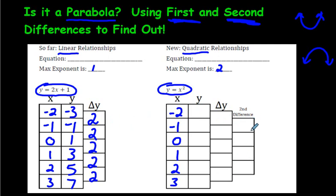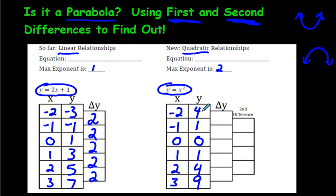Looking at the next table of values, we're probably going to need to keep going and do what's called the second differences. Let's plug in these numbers into the equation above. Negative 2 squared — that's negative 2 times negative 2, so be careful with the signs — the answer is positive 4. Negative 1 times negative 1 is 1. 0 times 0 is 0. 1 times 1 is 1. 2 times 2 is 4. 3 times 3 is 9. Notice there's a mirror reflection going on here: 4, 1, 0, 0, 1, 4. There's a really good chance this is a parabola.